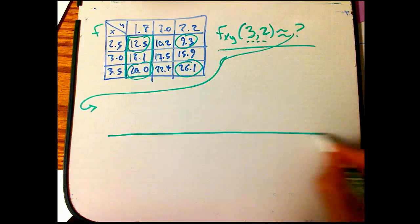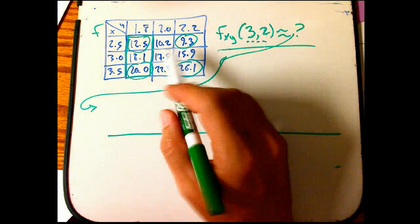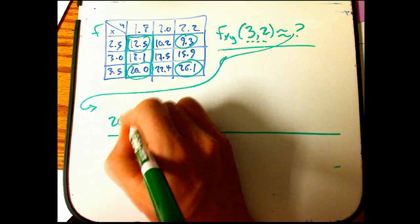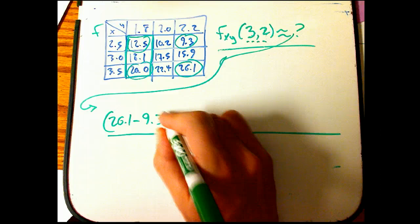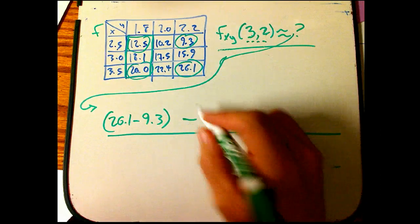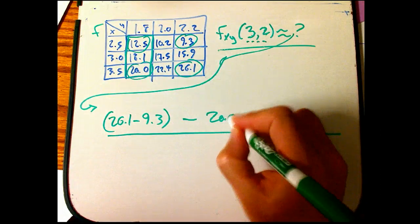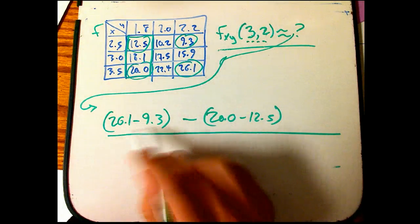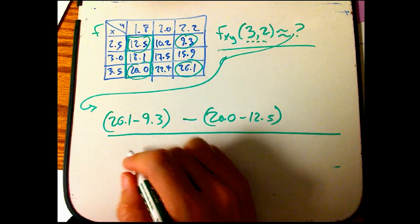What happened was I took this minus this. I took the 26.1 minus 9.3, and then minus the 20 minus 12.5. Now, each of those came in with a denominator. I'm going to actually put the denominator back in, but I'm going to put it as a common denominator.